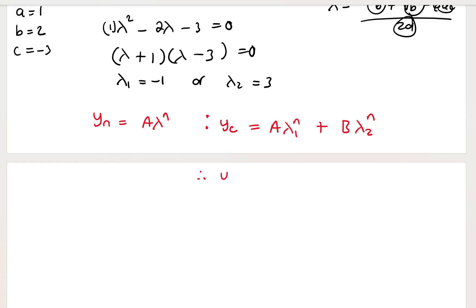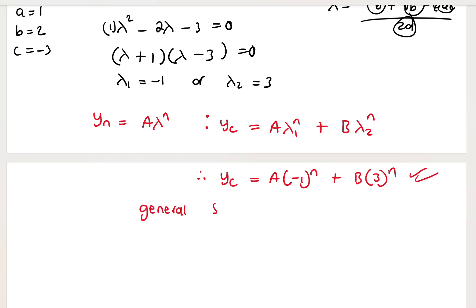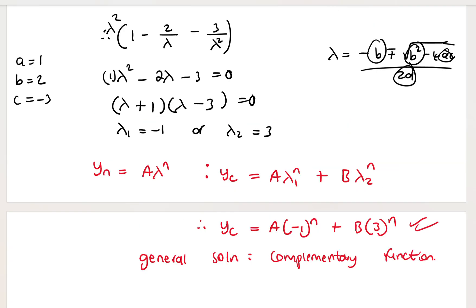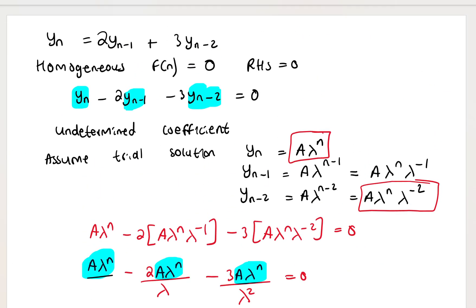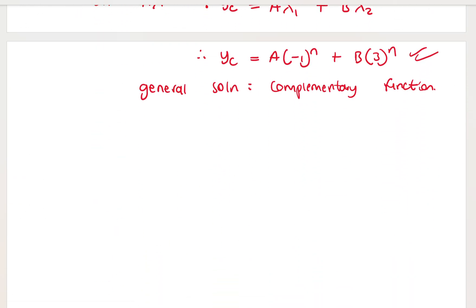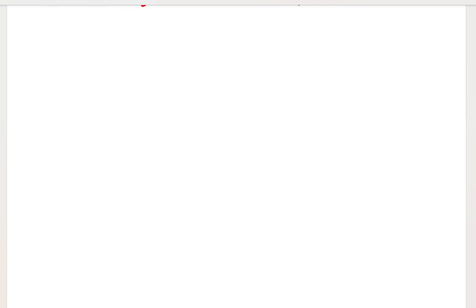The complementary function is y sub c equals A·λ₁^n plus B·λ₂^n. Substituting λ₁ = −1 and λ₂ = 3, the general solution is y sub c equals A·(−1)^n plus B·3^n. If initial conditions were given, we could solve for the constants A and B, but they are not provided here.